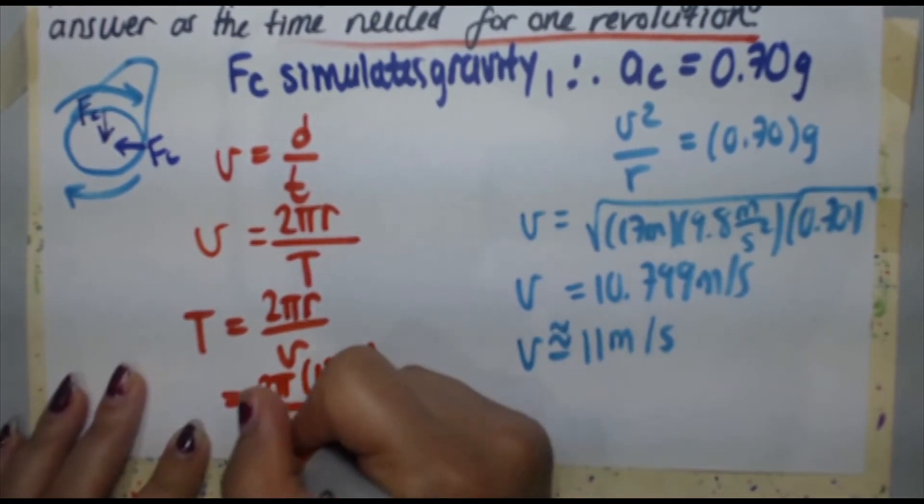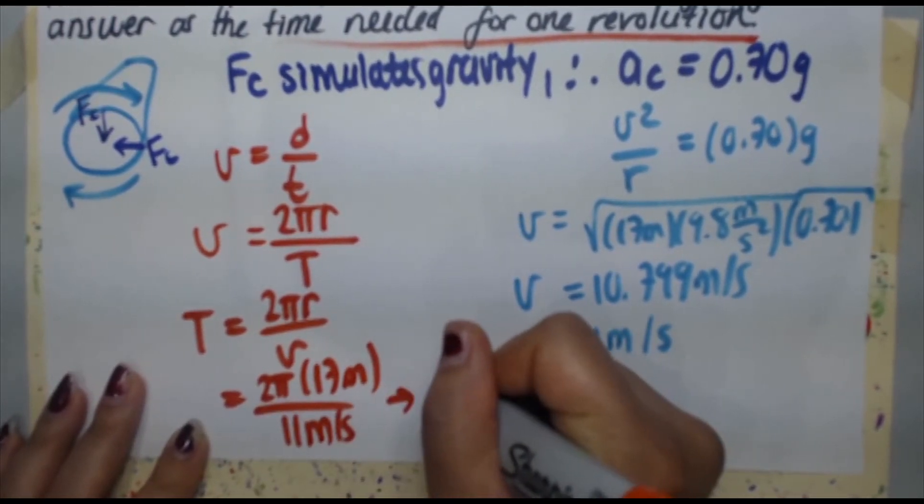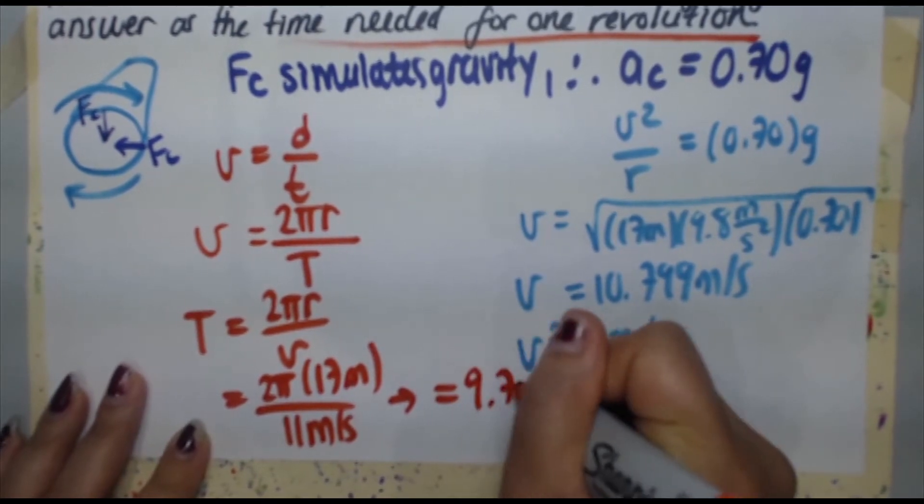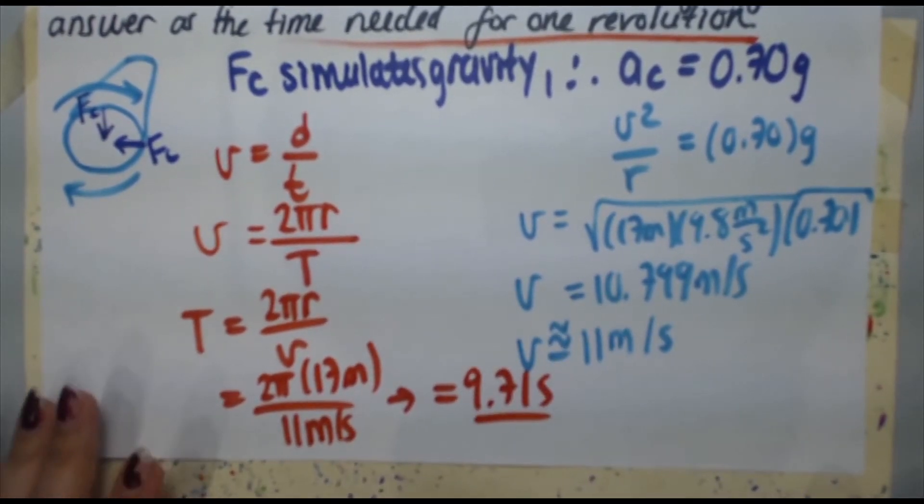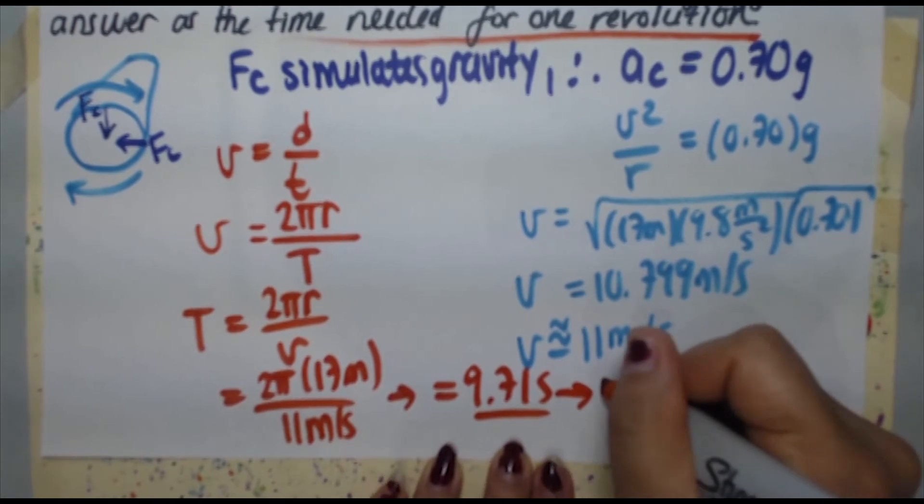When you plug that in you are going to get T is equal to 9.71 seconds. We need to round that to two sig figs so we're going to round that, T is equal to 9.7 seconds, and there's your final answer.